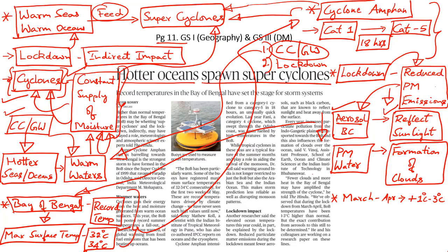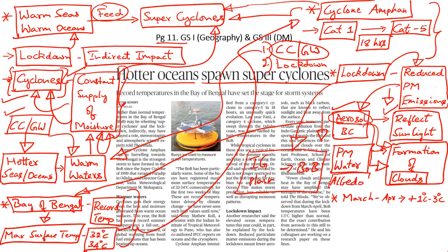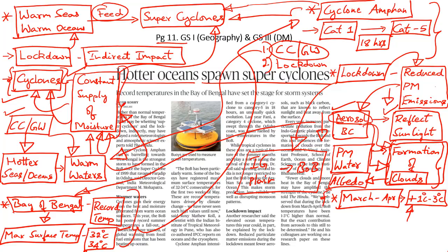Under regular conditions, particulate matter transported from the Indo-Gangetic plain into the Bay of Bengal introduces aerosols into the atmosphere, aiding cloud formation. But lockdown has reduced PM emissions, resulting in fewer aerosols and reduced cloud formation. Clouds have high albedo — high ability to reflect sunlight — which keeps water cooler and restricts moisture supply to cyclones. Scientists recorded an abnormal increase in Bay of Bengal surface temperature during March and April, at least 1 to 3 degrees Celsius higher than average, attributing this to climate change and the indirect impact of the lockdown.